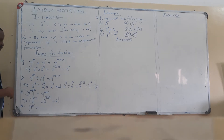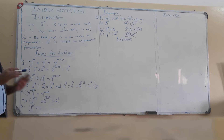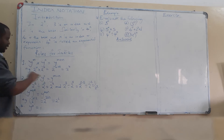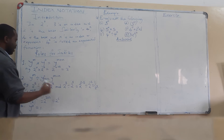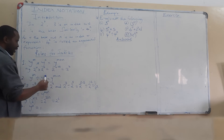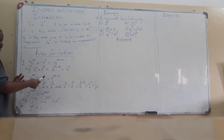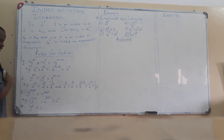The second rule has to do with division. If you divide numbers with the same base, you keep the base but subtract the powers in the order they appear. So if we have y to the power m divided by y to the power n, the common base is y, and we subtract the powers to get y to the power m minus n — not n minus m.